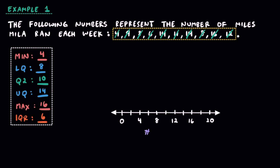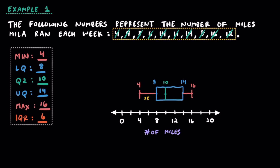Now let's make a box plot. First, we need to draw a number line and give it a title — I'm going to write 'Number of Miles.' Then I'm going to plot our five essential points. Once we've plotted our five points, we draw a rectangle around the lower quartile and upper quartile, draw a line showing where Q2 or the median is, and then draw horizontal lines connecting the minimum to the lower quartile and the upper quartile to the maximum, each with a vertical line at the end. Here we have a box plot, with four distinct sections representing 25% of the data in each.